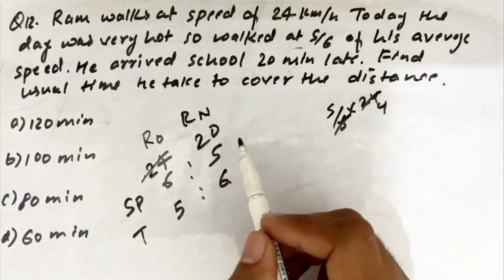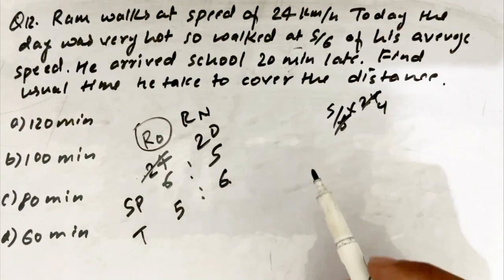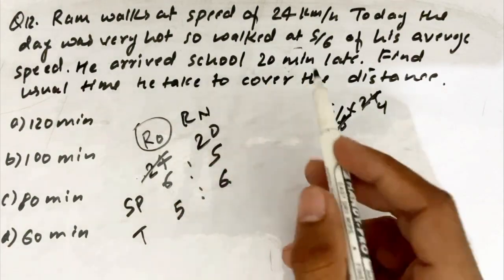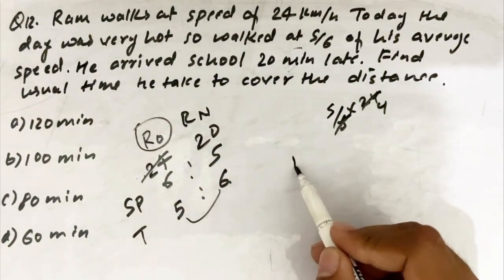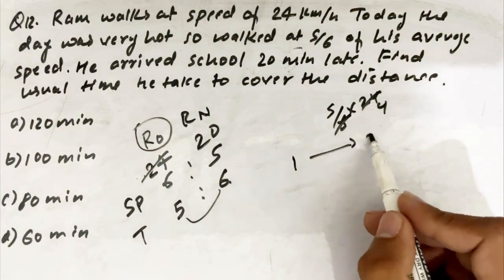What is the usual time? The old time. 20 minutes late. The difference, 6 minus 5 equals 1, is equivalent to 20 minutes.